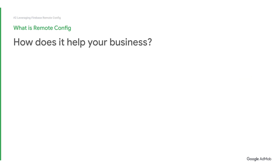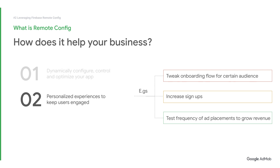Firebase Remote Config is a product that is part of the Firebase app development platform. Remote Config lets you dynamically control, change, and optimize your app to achieve your goals and keep users engaged. All this can be done without releasing a new version of your app. Are you looking to tweak the onboarding flow for a certain audience, increase sign-ups, or test the frequency of ad placement? Remote Config can help you do all that easily through personalization and experimentation.